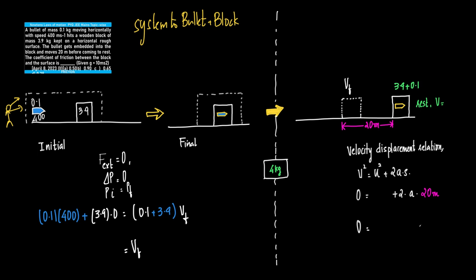We have the initial condition — before collision — and the final condition — after collision. Between these two conditions, the net external force acting on the system is zero. By the force-impulse-momentum theorem, the change in momentum equals zero, meaning initial momentum equals final momentum. Initial momentum is before collision and final momentum is after collision, and both have two components.